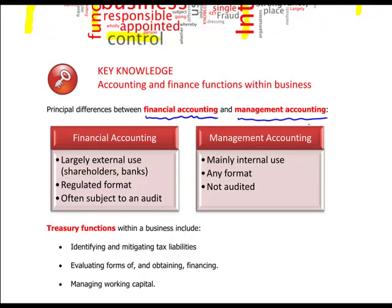First we're highlighting the distinction between financial accounting and management accounting. Both are forms of accounting, but one is focused on financial reporting and the other on management. Financial accounting is largely for external use — shareholders, potential investors, and banks will use the financial accounting reports. It has a regulated format; you have to follow IFRSs, and financial accounts are often subject to an audit.